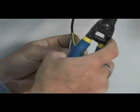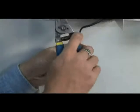Strip 3 quarters of an inch off the insulation from the red, white, and green wires in the thermostat cable.